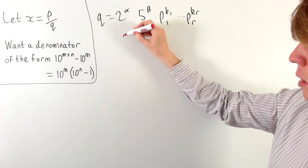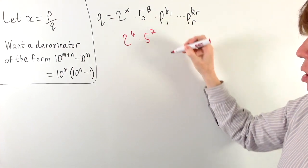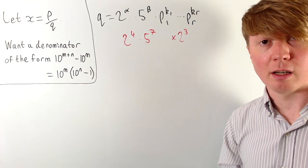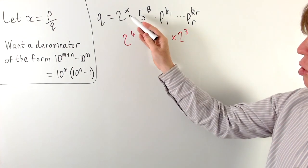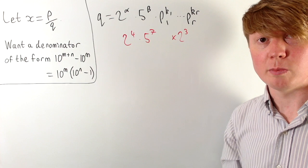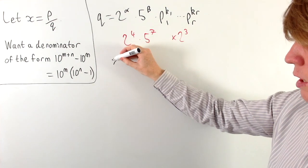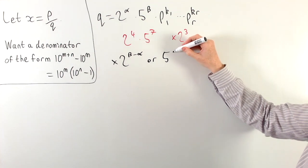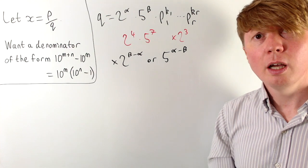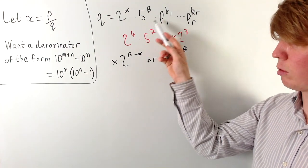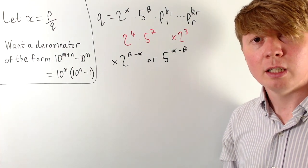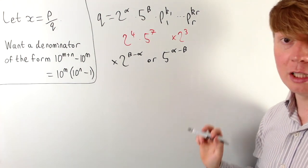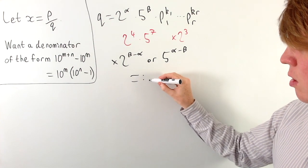Looking at an example: if we had 2 to the power of 4 times 5 to the power of 7, we would just need to multiply by 2 cubed to get 10 to the power of 7. In general, it depends on which is bigger out of alpha and beta. If beta is bigger than alpha, we might need to multiply by 2 to the power of beta minus alpha; or by 5 to the power of alpha minus beta if alpha is bigger. If they're equal, we already have a power of 10. In either case, we multiply by one of these — we'll call this number capital A.